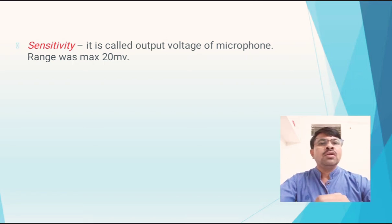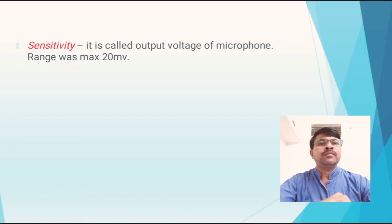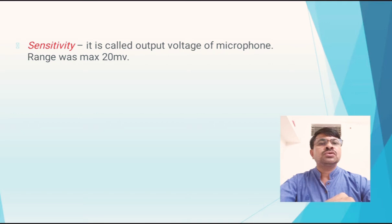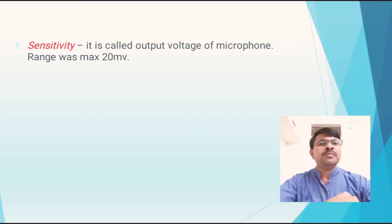Sensitivity: we know that the microphone output is an electrical signal, and any electrical signal must have amplitude. The microphone output is referred to as sensitivity. Different microphones have different output voltages, called different sensitivities. The sensitivity of a microphone is in the range of microvolts to millivolts, meaning it is very small. Therefore, we require a pre-amplifier circuit to boost the microphone output.